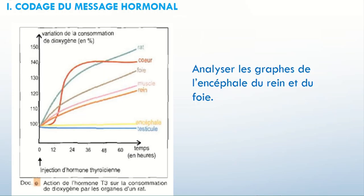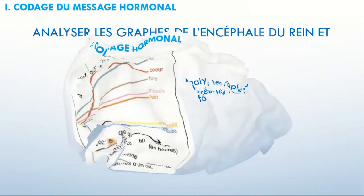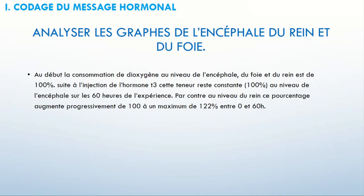Les résultats sont représentés sur Y, donc c'est la variation de la consommation de O2. Puisque j'ai un graphe avec des valeurs, je n'oublie jamais de mettre les valeurs. Et en passant d'une valeur à l'autre, je n'oublie jamais les termes suivants : augmente, diminue ou reste constante. Si vous pouvez comparer les valeurs, dire que ça augmente trois fois, ça augmente quatre fois, ça sera bien. Et c'est ça en fait les remarques à prendre en considération dans n'importe quelle analyse.